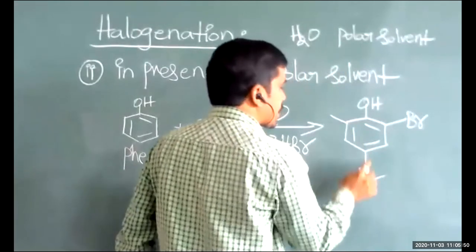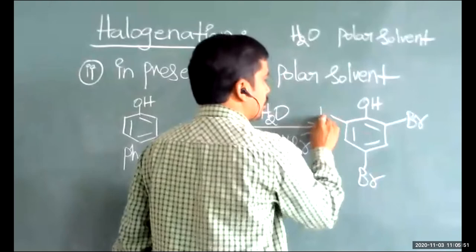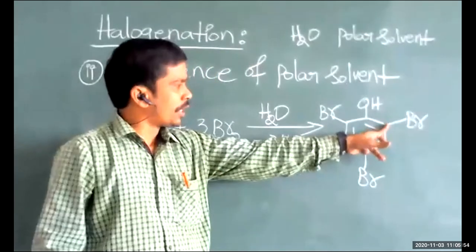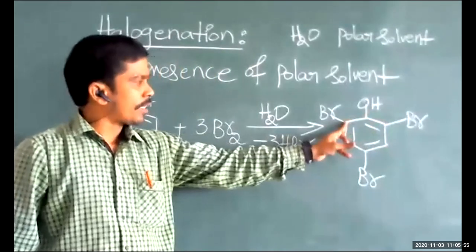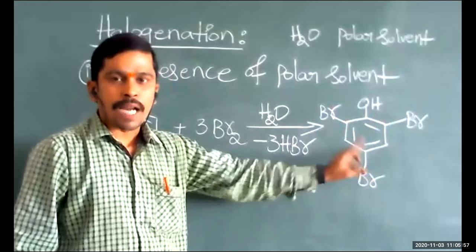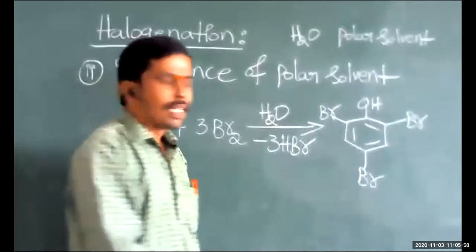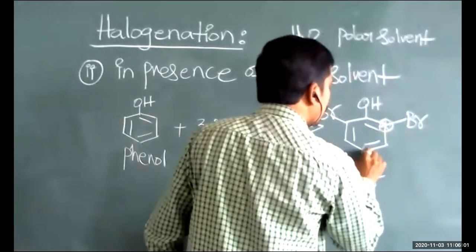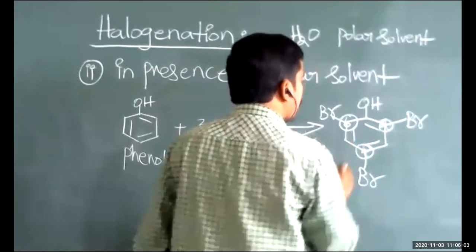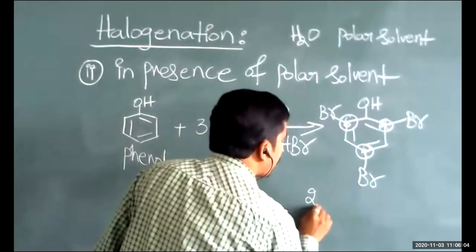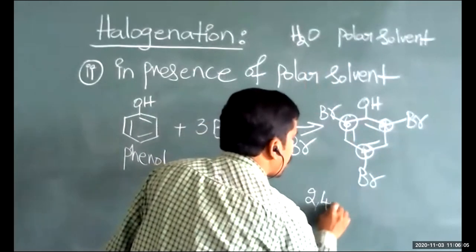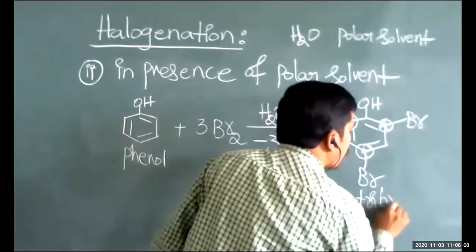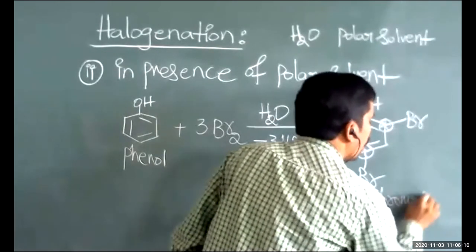There is only one para position (C4) and two ortho positions (C2 and C6). The name of the product is 2,4,6-tribromophenol, formed by substitution at positions 2, 4, and 6.